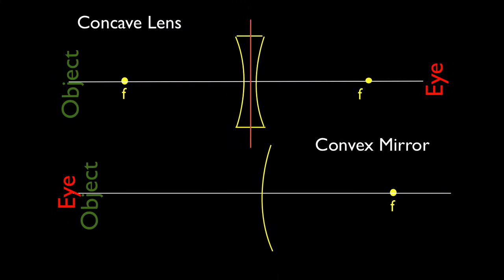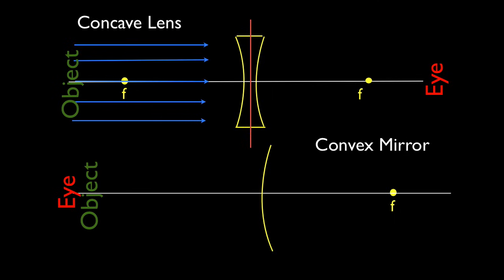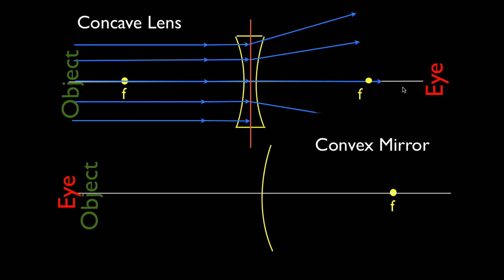Now we're going to look at the concave lens and the convex mirror. Once again, light rays are coming into the lens and they're going to pass through it. In reality they get refracted at each boundary between the air and the lens, but we can approximate that refraction by showing it at the center line. After they pass through the lens, they're going to be bent in such a way that they diverge — they move away from each other. Therefore, this is called a diverging lens; a concave lens is a diverging lens.